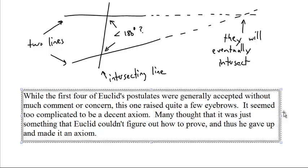Many people thought that it was just something that Euclid couldn't figure out how to prove. And because he didn't know how to prove it, he just gave up and said, fine, you have to believe it if you want to read my book, because I don't know how to do this.